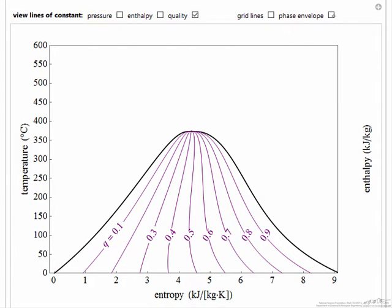So on this phase envelope, let's put that back to make it easier, we're showing lines of constant quality with the saturated liquid being quality of zero, saturated vapor quality of one, and the mass fraction that corresponds to vapor is the quality.